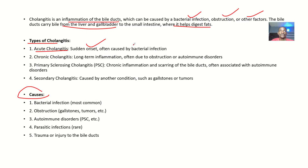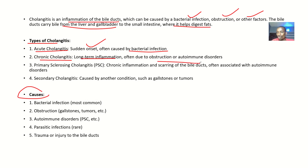Acute cholangitis is mostly caused by bacterial infections. There could also be chronic cholangitis — this one has been there over a long time, so you're talking about long-term inflammation often due to obstruction or autoimmune disorders.